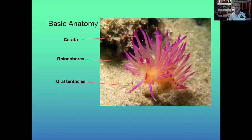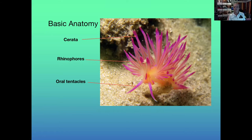These are aeolids — a completely different body structure. They have cerata, which perform effectively the same function as gills for oxygen transfer. They still have rhinophores on the front, but aeolids quite often have really obvious oral tentacles used for finding their way around — similar to feeling in front of you when walking in the dark — basically to find food and navigate.